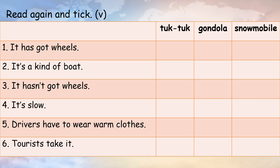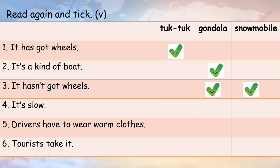Read again the text and tick. Number one: it has got wheels — the transport is tuk-tuk. The transport with wheels is the gondola too. Number two: it hasn't got wheels — they are gondolas and snowmobiles. Number three: it's slow — it is the gondola. Number four: drivers have to wear warm clothes — it is the snowmobile. Number five: tourists take rides — they are tuk-tuk and also gondolas.